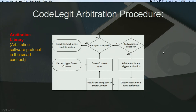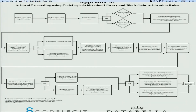Smart contract arbitration includes having a clause within the smart contract — a code, since the smart contract consists of code. CodeLegit has called its arbitration clause the 'arbitration library,' which is basically an arbitration software protocol within the smart contract. The parties first agree upon a legal contract, then they agree upon the smart contract — first a classic typed contract, then it's based in code.